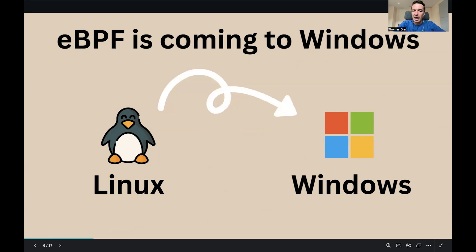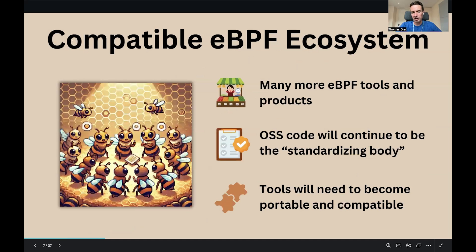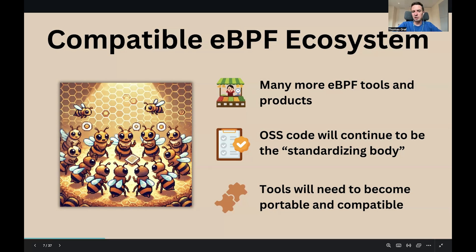That's exciting — lots of reach. That additional popularity also comes at a particular cost: as an eBPF ecosystem, we have to ensure that all the tools we're writing are compatible. End users do not want to think about whether one tool is compatible with another. Many, many tools are coming to market or being open-sourced every year based on eBPF. These tools often rely on the same hook points or implement the same ideas. We need to come together and make sure these tools become compatible and we solve the problem of interoperability.